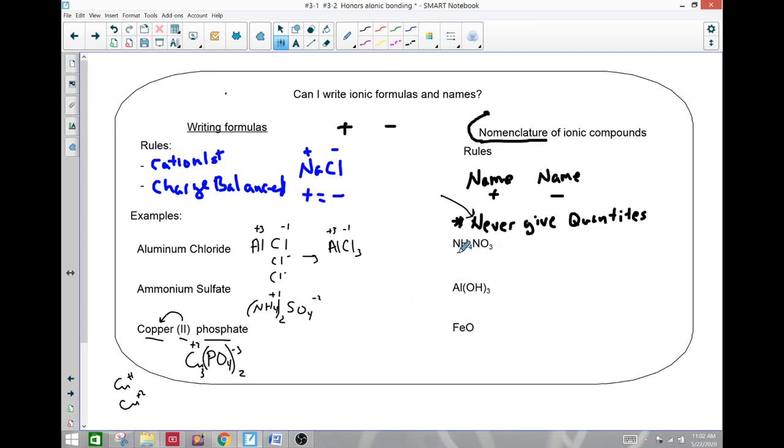This guy here, again, to do this, just the names of each. I have ammonium and nitrate. That's it. Ammonium nitrate. Here, aluminum hydroxide, and there's three of them there. And you may be tempted to tell us that there's three there, but we just say aluminum hydroxide.